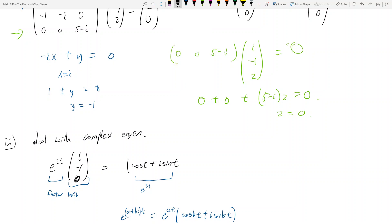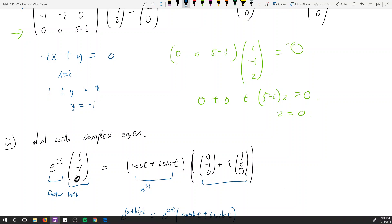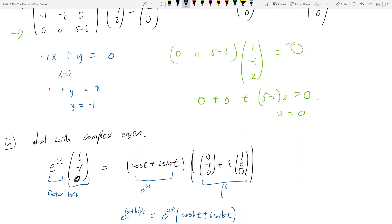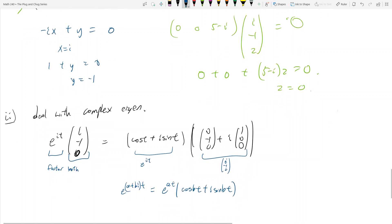And now I want to multiply it by, essentially, 0, negative 1, 0 plus i times 1, 0, 0, right? So that's the second vector, but I split it up into real and imaginary part. So this is really i, negative 1, 0, okay? So that's, we factor both into real and imaginary part.